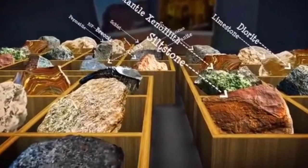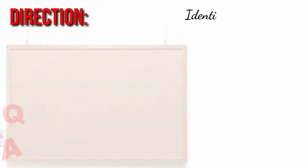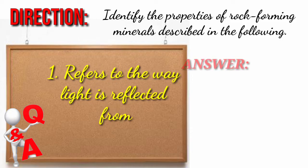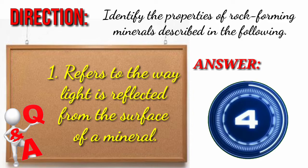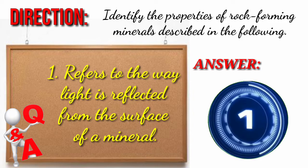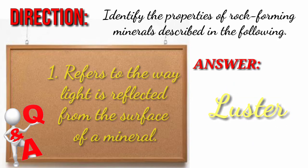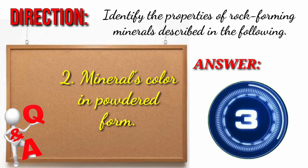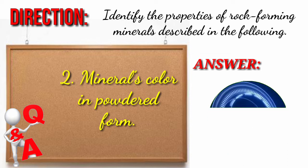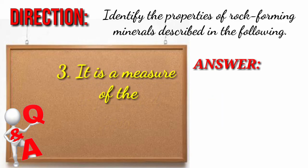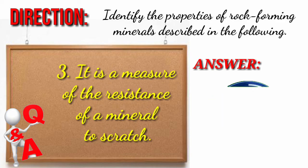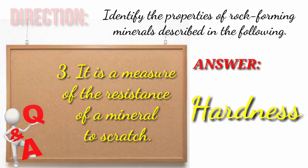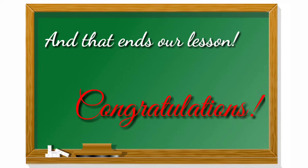And that's it. Now let's check your understanding. Identify the properties of rock-forming minerals described in the following. One: refers to the way light is reflected from the surface of a mineral. That's correct — luster. Two: mineral's color in powdered form. Very good — streak. Number three: it is a measure of the resistance of a mineral to scratch. There you have it — hardness. And that's the end of our lesson. Congratulations. Thank you.